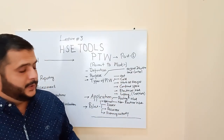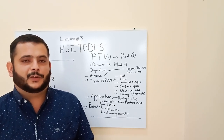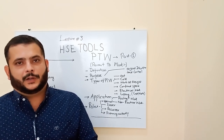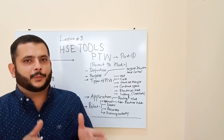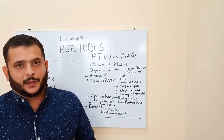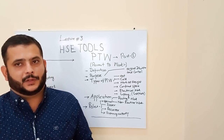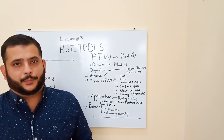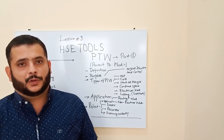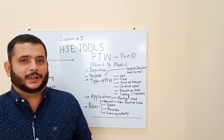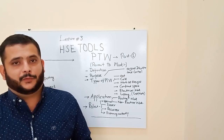Then we go through Confined Space. A confined space is defined by limited entry and limited exit, and there is no permanent occupancy of employees in that area. Examples include water tanks and the tanks or bowsers of fuel tankers that travel to deliver fuel from petrol pumps to cities. These are considered confined space entries.